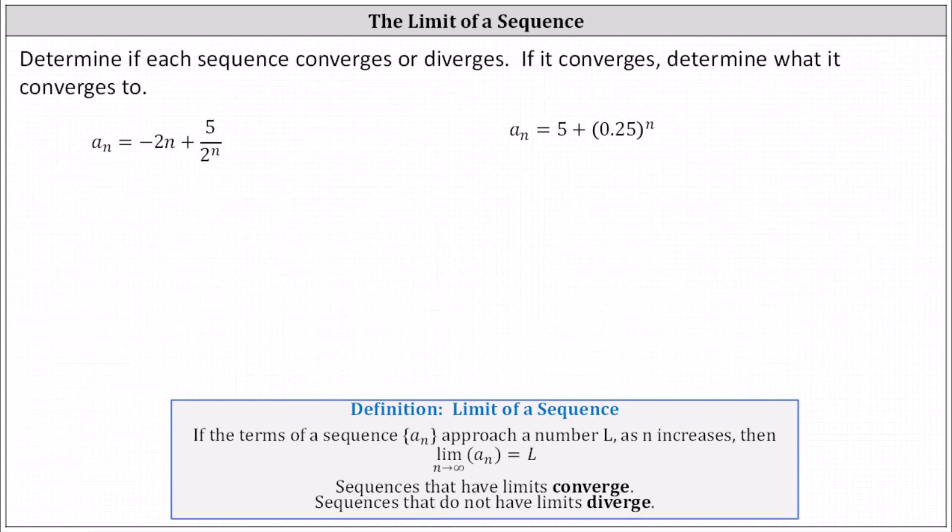Determine if each sequence converges or diverges. If it converges, determine what it converges to. We think of a_n as a function of n and determine the limit as n approaches infinity. If the limit exists and equals L, the sequence converges to L. If the limit doesn't exist, the sequence diverges.